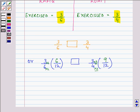Now we need to decide which one of them is greater. It's 9 by 12. We can say that as our answer that 3 by 4 is greater than 3 by 6. That means Rohit exercised for a longer time.